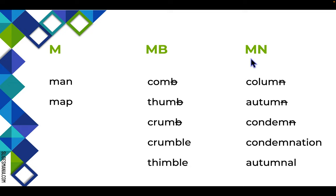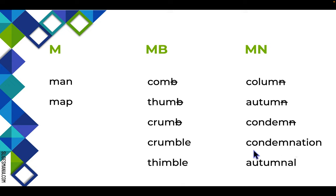Likewise, when you have M and N together, the N is often silent, like in 'column,' 'autumn,' or 'condemn.' But if you add suffixes, the N is no longer silent, like in 'condemnation' or 'autumnal.'